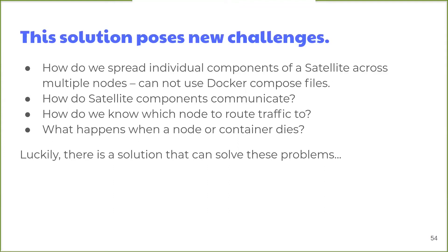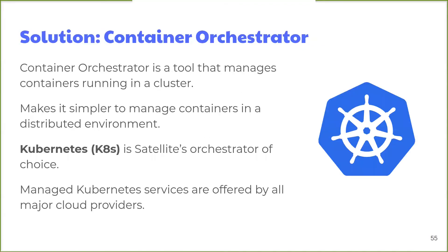This solution comes with challenges. How do we spread individual components of a Satellite across multiple nodes? We can't use the Docker Compose file anymore since it is node-scoped and cannot distribute containers across multiple nodes. We would also have to write application code to keep track of available nodes and resource utilization. Additionally, since individual components of a Satellite can live on separate machines, they need a way to dynamically discover one another's IP addresses and ports. We also need to know which node to route traffic to for a given back-end instance, and handle what happens when a node or container dies — ideally, failed containers would be restarted automatically, possibly on a different node. Luckily, there is a solution: a container orchestrator.